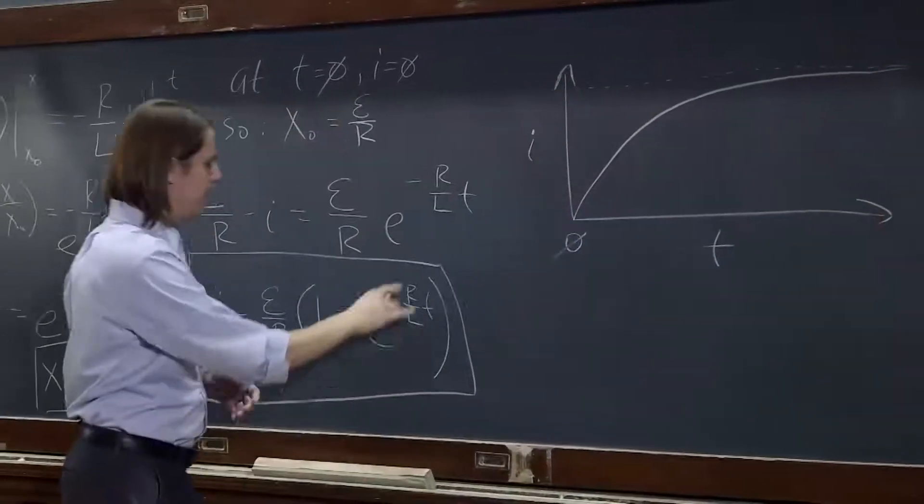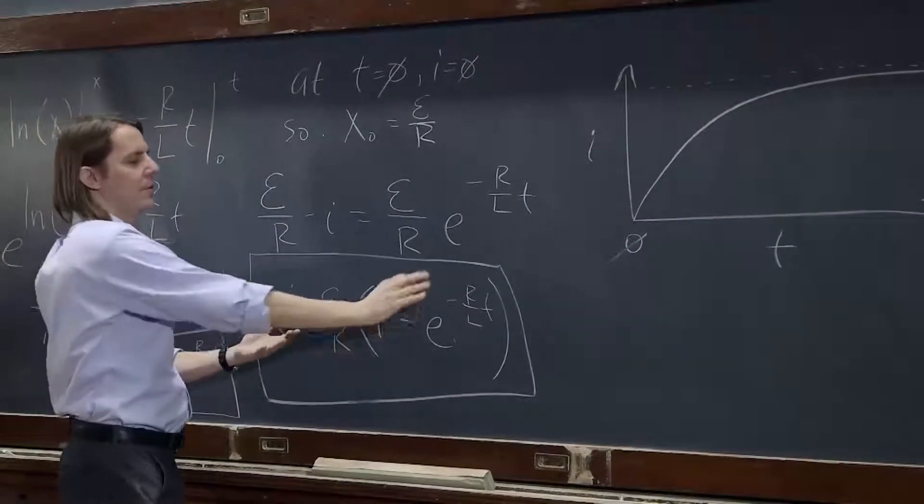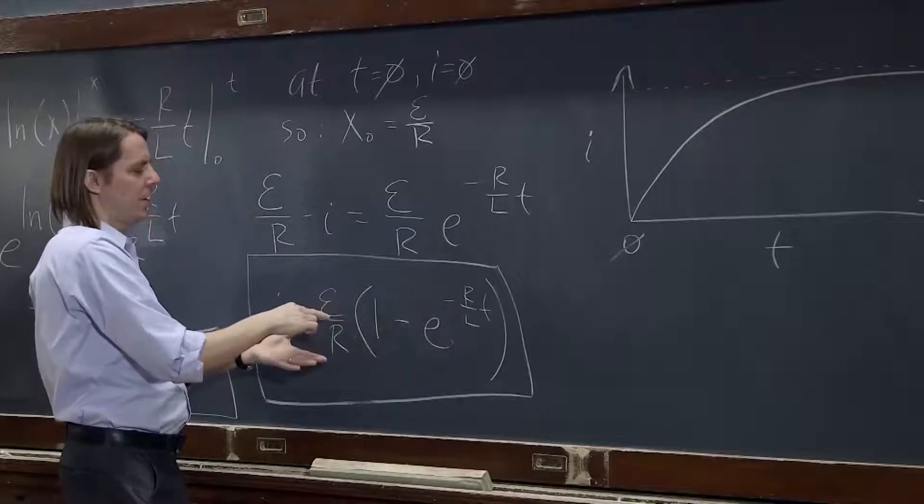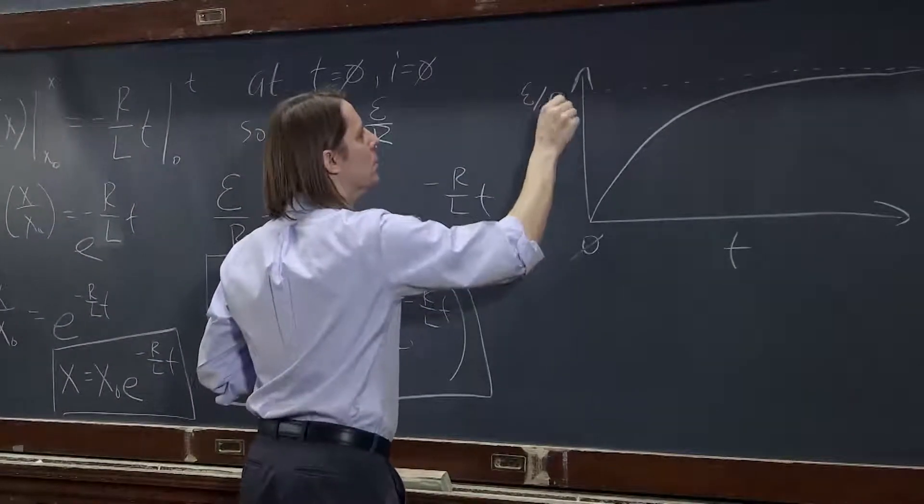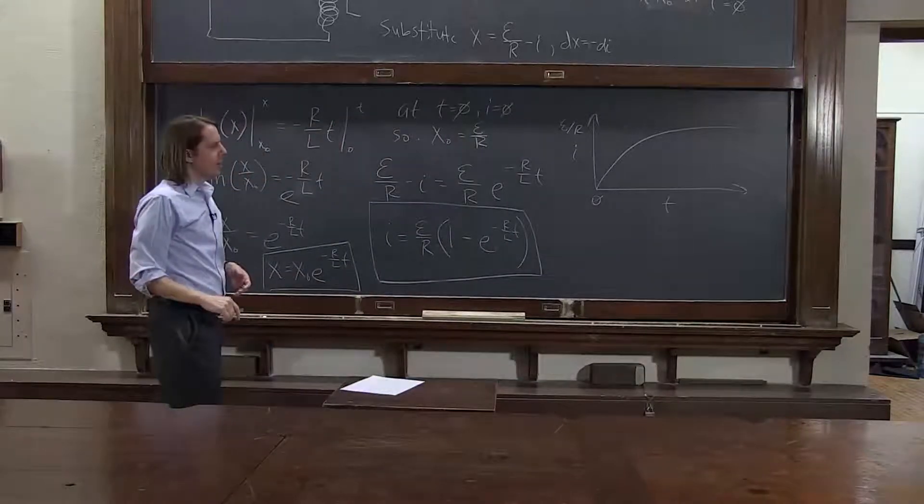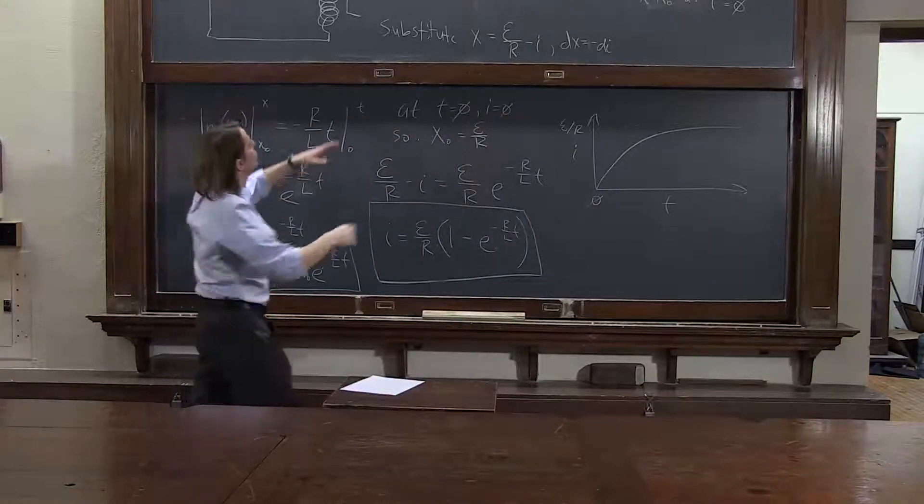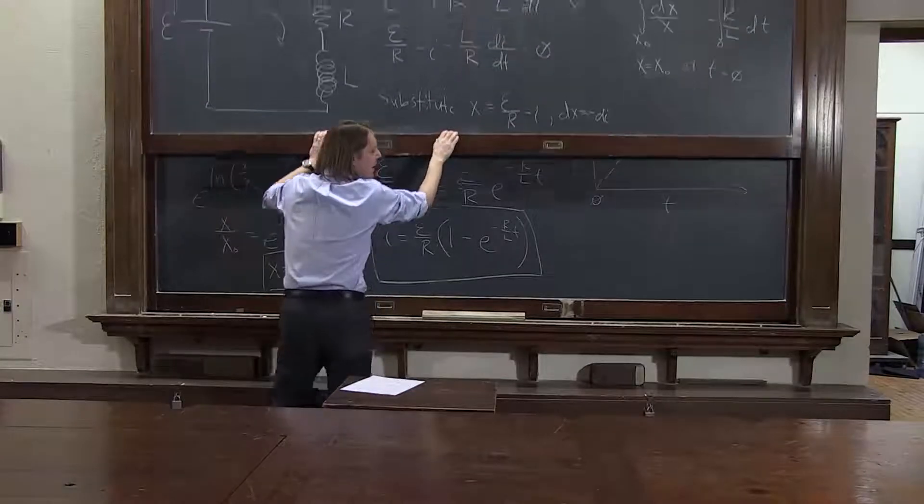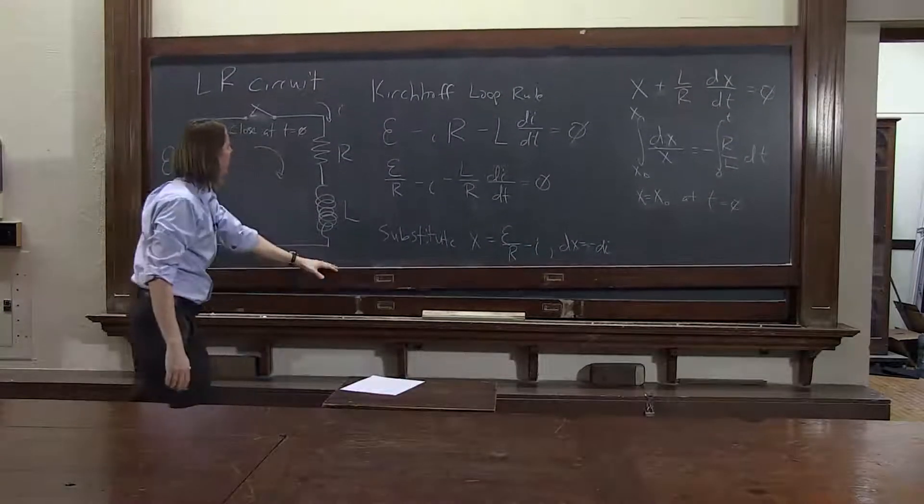And at time equals infinity, this basically just becomes a constant. This thing goes to 0, and it goes with a constant emf over r. So that's the behavior. Now, let's see if it makes sense. Let's go back to the circuit and see if that's what we think would happen.